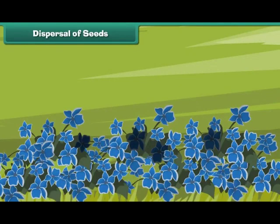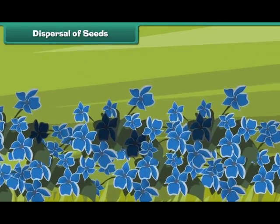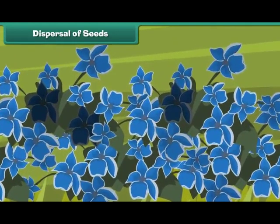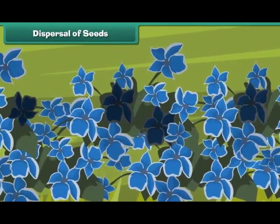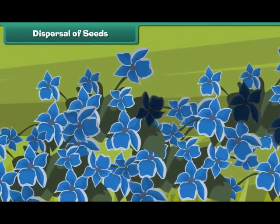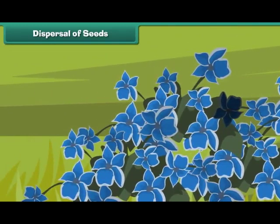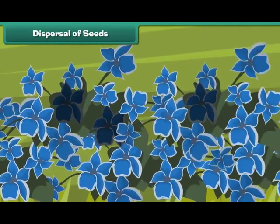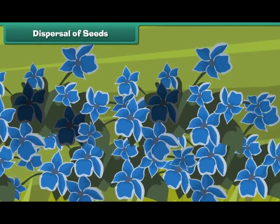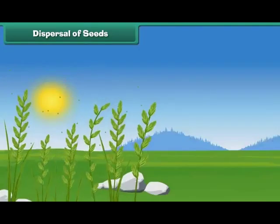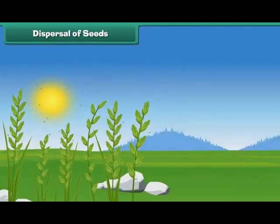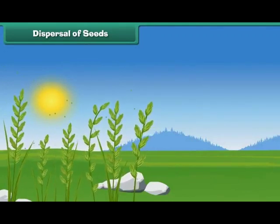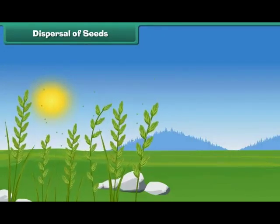Dispersal of seeds: If all the seeds were grown near the parent plants, there would certainly be a shortage of space, water, minerals, and sunlight, and all the plants would not grow properly — most of them would naturally die. So it is necessary that the seeds of plants should be scattered over large distances. Nature has arranged some methods of seed dispersal in many ways.